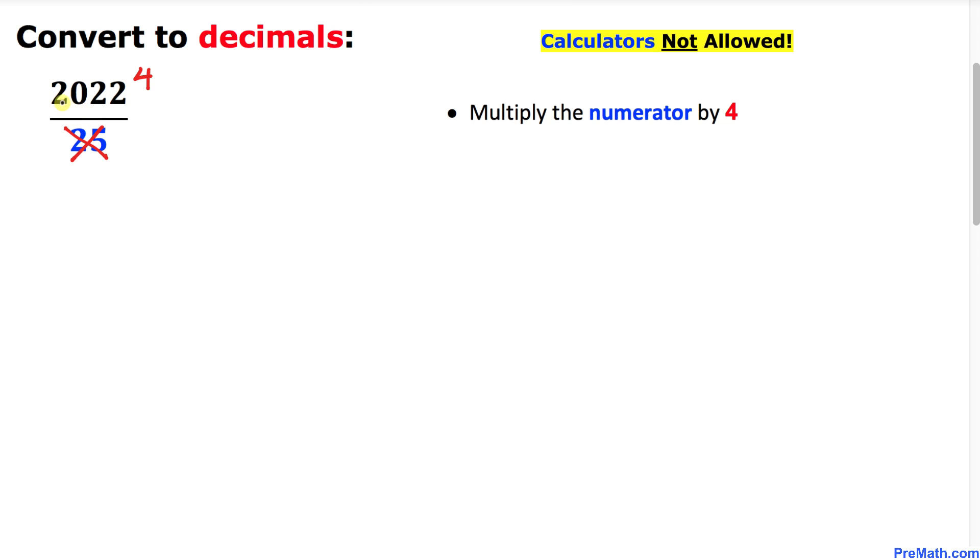If we multiply 2022 times 4, that gives us 8088. Here's our final step: place the decimal after two digits from the right. So two digits after the right is going to be this place, and that's our answer.